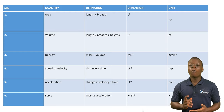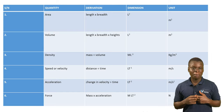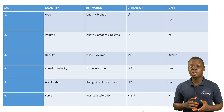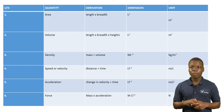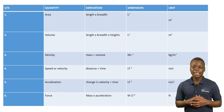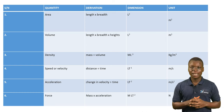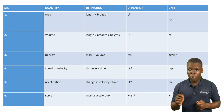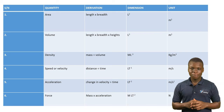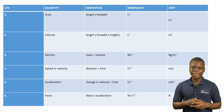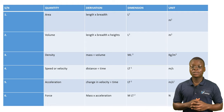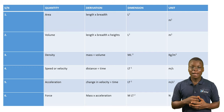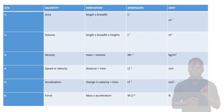Next up is acceleration. The formula for acceleration is change in velocity divided by time. The dimension for acceleration is therefore LT raised to power minus 2, and acceleration is measured in meters per second squared. Next up we have force. Force is the push or pull exerted on a body. The derivation and formula of force is mass times acceleration, giving the dimension MLT raised to power minus 2. Force is measured in Newton.